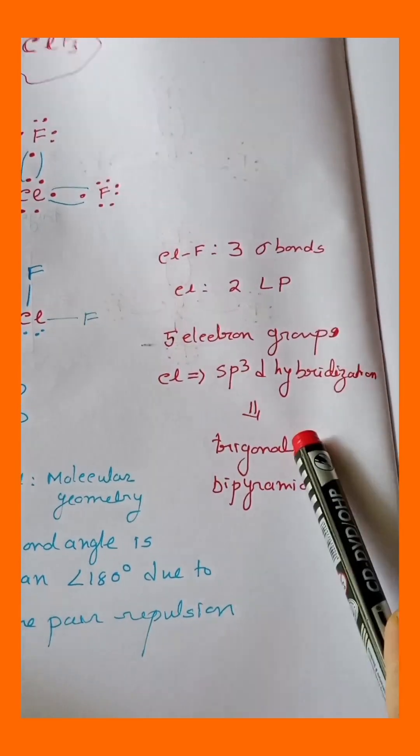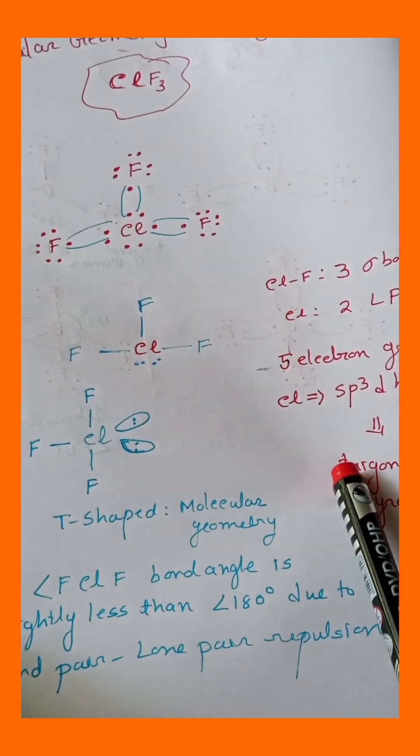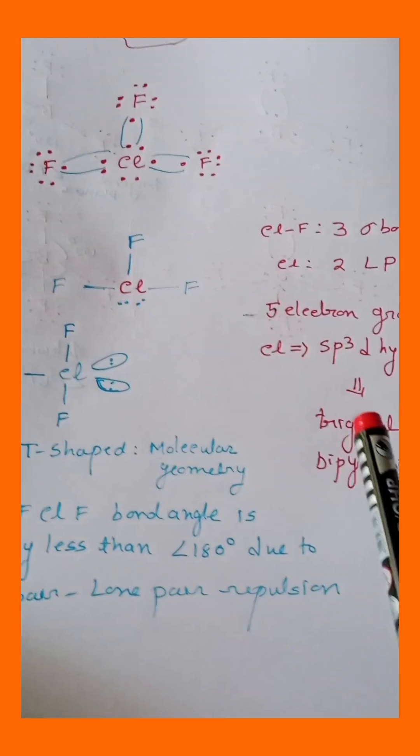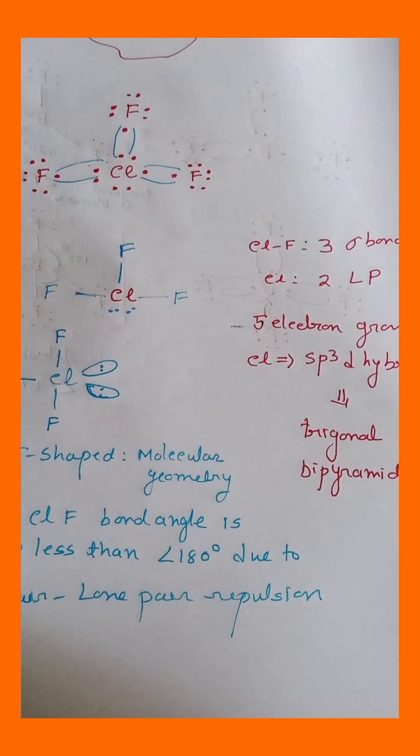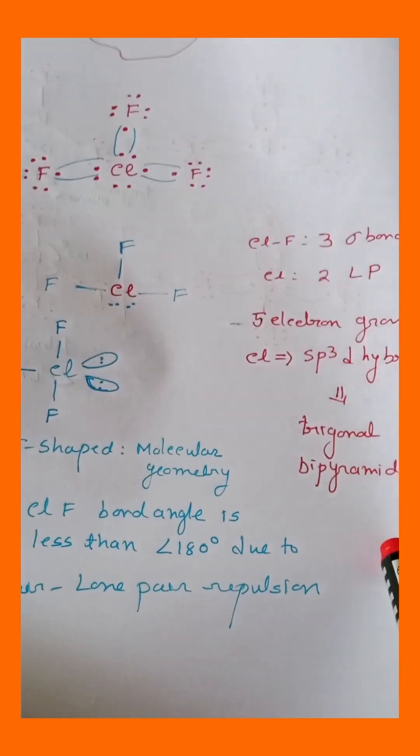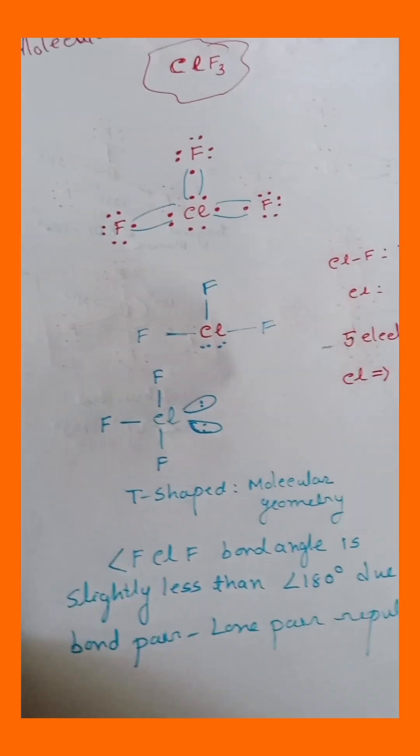That means it is a 5 electron group. 5 electron group means chlorine hybridization should be sp3d. sp3d hybridization means the molecular geometry should be trigonal bipyramidal.